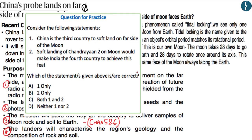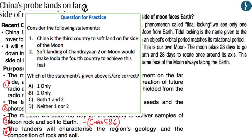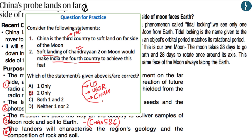Only one side of the moon faces Earth because of tidal locking — a situation when an object's orbital period matches its rotational period. The moon takes 28 days to orbit Earth and also 28 days to rotate once on its axis, resulting in the same face always facing Earth. A practice question answer: China is the first country to soft land on the far side of the moon, but the third country overall to soft land on the moon — after the US and Soviet Union. India's Chandrayaan-2 aims to make India the fourth.